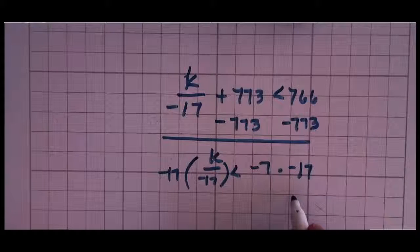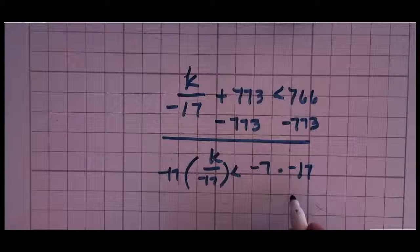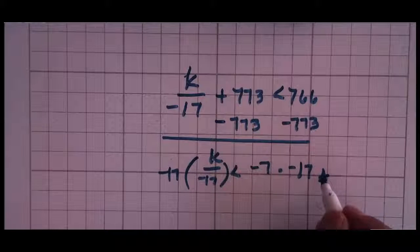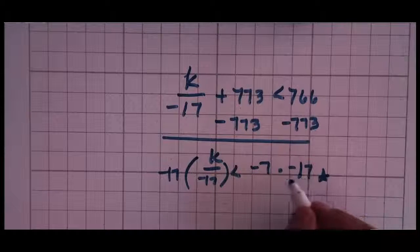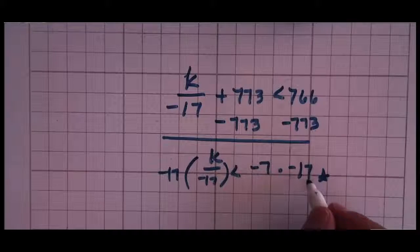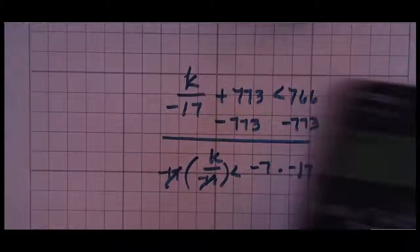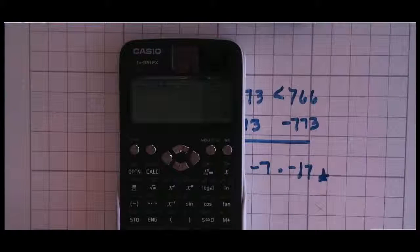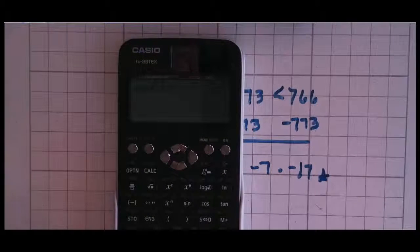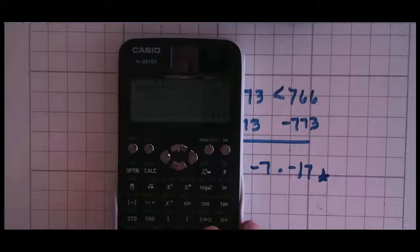I'm going to multiply by negative 17. Did you hear what I just said? Multiply by a negative number. Put a little star or an x or somehow signify to yourself that you did multiply by a negative number. These 17s are cancelled out. Negative 7 times negative 17. The answer is 119.